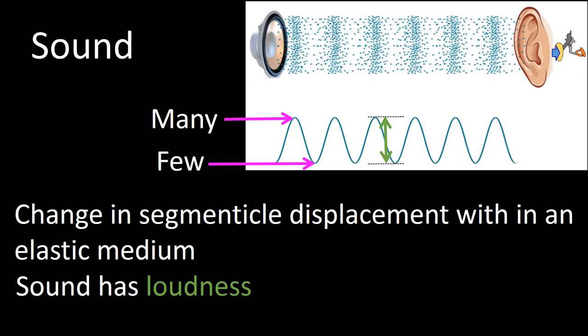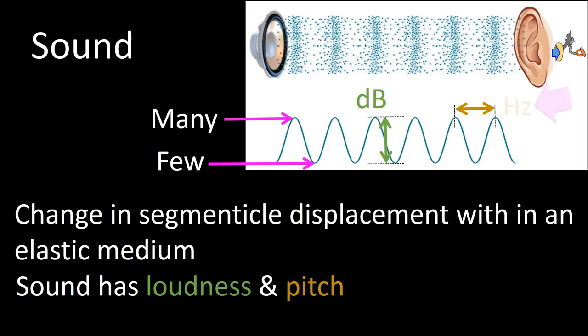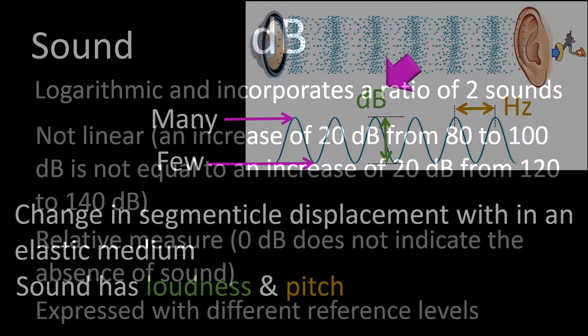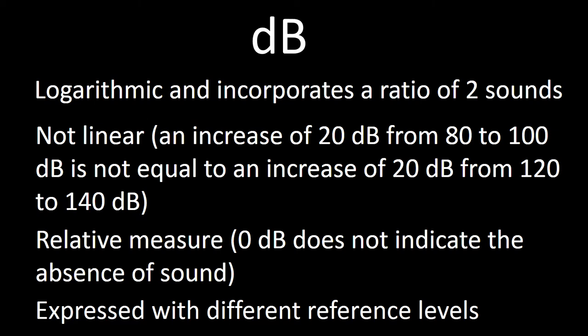Sound has loudness, which is measured using dBs. Sounds also have pitch. Pitch is a function of frequency and it is measured in hertz, which means cycles per second. I will first address loudness, which is measured in dBs. dB is a phony unit especially when used to quantitate sound. I will tell you four reasons for saying that dB is a phony unit.